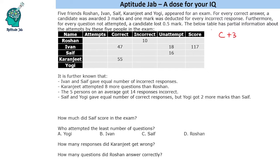Correct gives plus 3, and 1 mark was deducted for every incorrect response — so incorrect gives minus 1. For every question not attempted, a candidate lost half a mark. So even if you do not attempt a question, you would lose marks. Correct fetches positive marks and incorrect or unattempted questions result in losing marks. This is the table given below with some values filled and some information given in the statements.